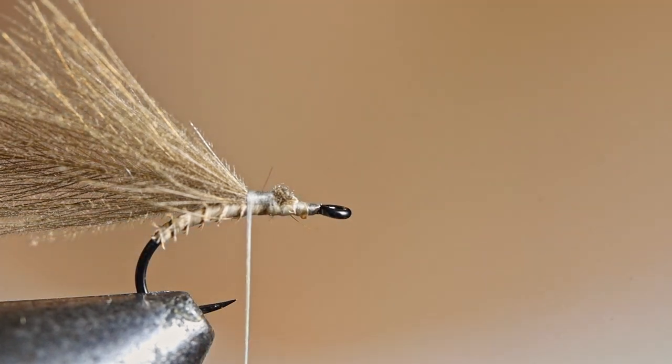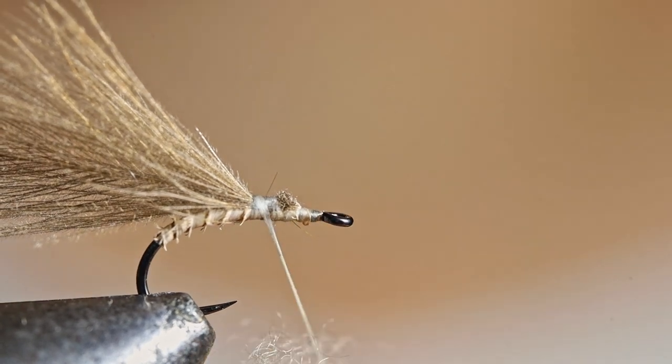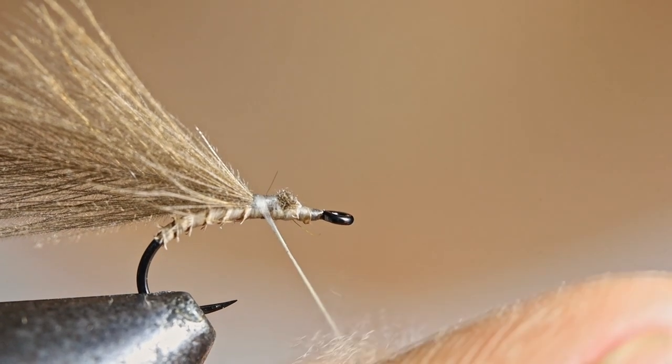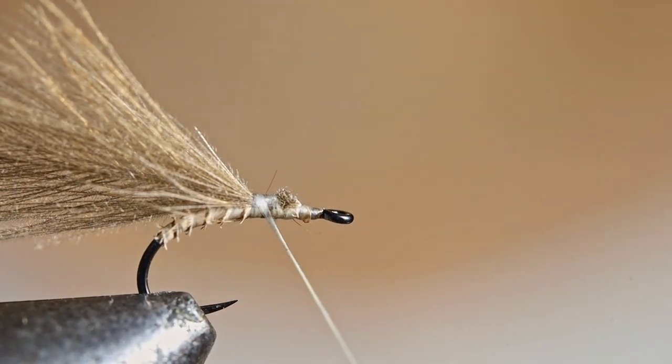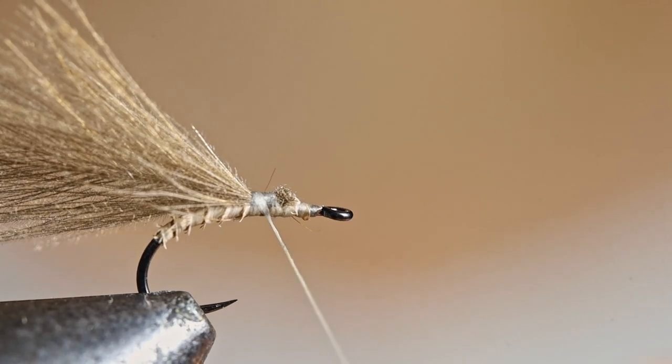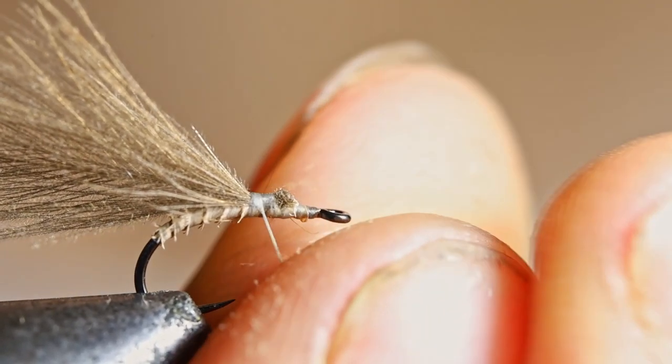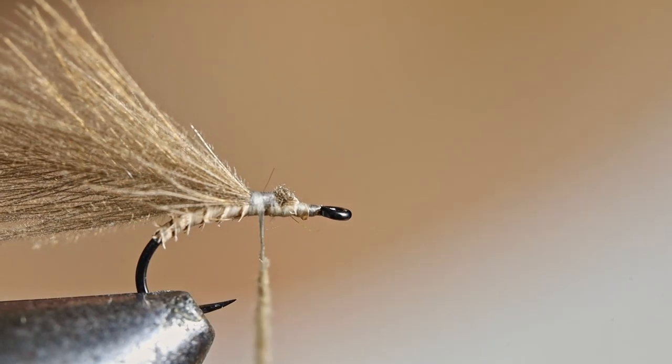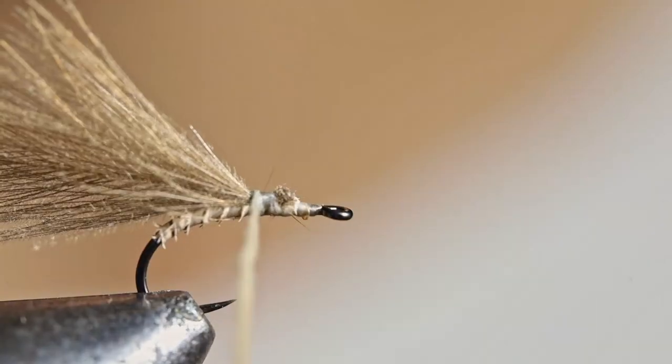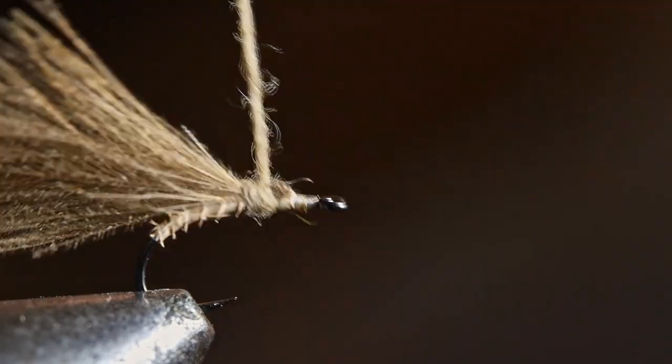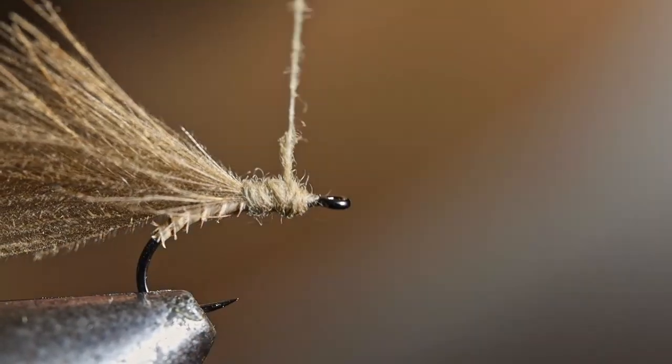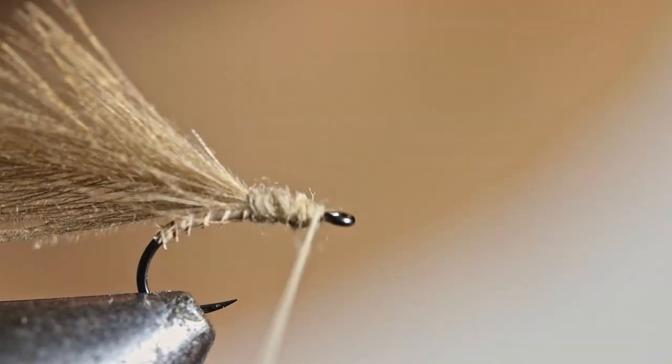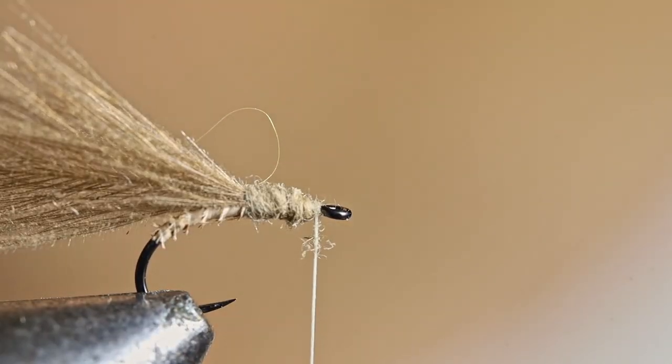Now I'm going to use some superfine dubbing in roughly the same color as the CDC. You can also just use haesier if you need to. In fact, this isn't even true superfine dubbing. This is actually just the fluff that you get at the base of deer hair. But it works fantastically well for dry flies. Let me make a bit of a thorax here. Let's wrap that too.